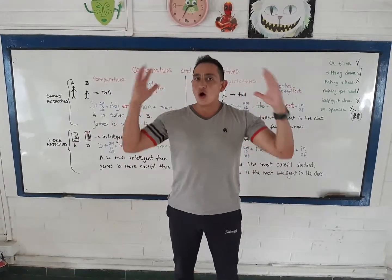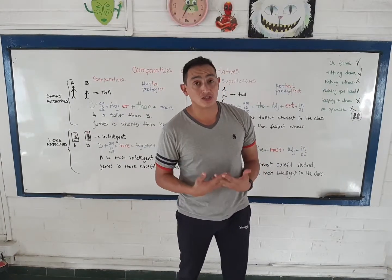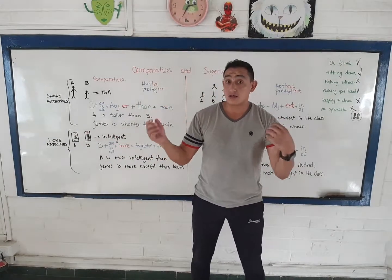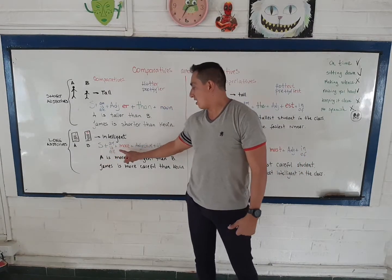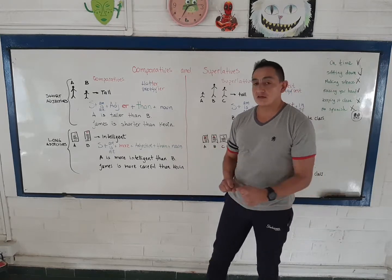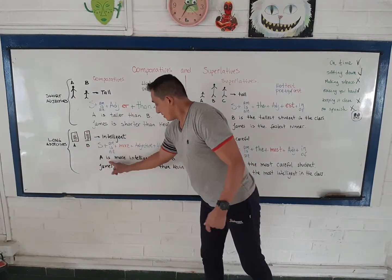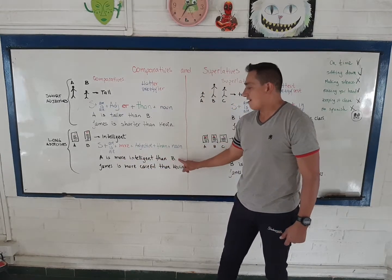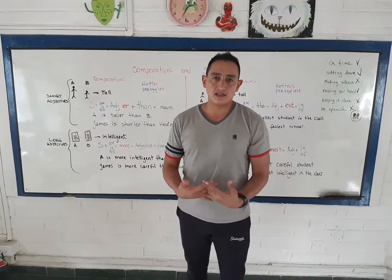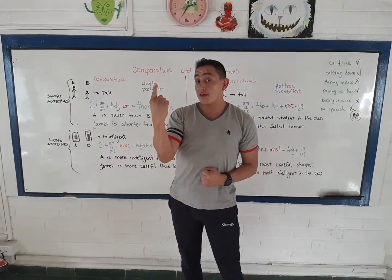But what happens if I have a long adjective, like 'intelligent'? I cannot say 'intelligenter' — it is not possible. When we have an adjective that is long, like three or more syllables, we are going to use the subject — am, is, or are — then 'more' and the adjective with no changes, followed by 'than' and a noun. For example, A is more intelligent than B. Or, James is more careful than Kevin. Or, James is more interesting than my sister. That is when you want to use a long adjective — that is a comparative.